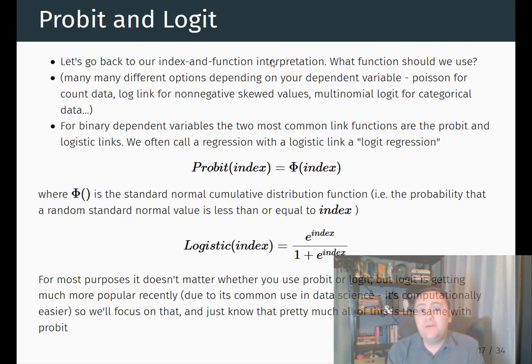And the link function for a probit is the normal cumulative distribution function, which is basically for a given z-score, what's the probability that you get a z-score less than that? And for the logistic index function, which is what is used for logit regression, it's e to the power of the index over one plus e to the power of the index. Now, the features that these have that are useful is, first of all, they can't possibly predict outside the bounds of zero to one. If you put in an index of negative infinity, you'll get a prediction of approximately zero, and it won't go any lower. If you put in a prediction of an index of positive infinity, you'll get a prediction of one and no higher. And then all the numbers in the middle are gonna be in the middle there.